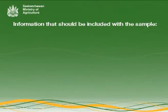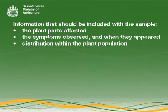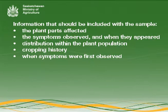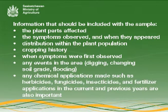The second key component is information, which is just as vital as the sample itself. While this can take time, it is an important part of the process. Information that should be included with the sample: the plant parts affected, the symptoms observed and when they appeared, distribution within the plant population, the cropping history, when symptoms were first observed, any events in the area such as digging, changing of the soil grade, flooding, etc., or any chemical applications made such as herbicides, fungicides, insecticides and fertilizer applications in the current and the previous years.